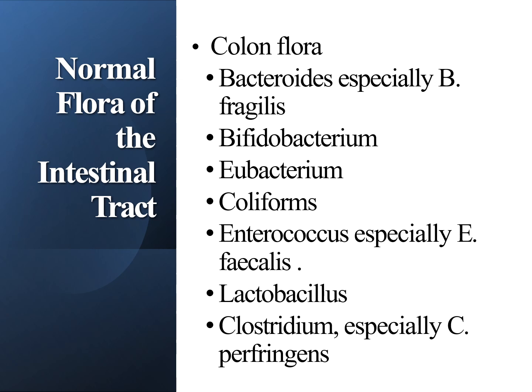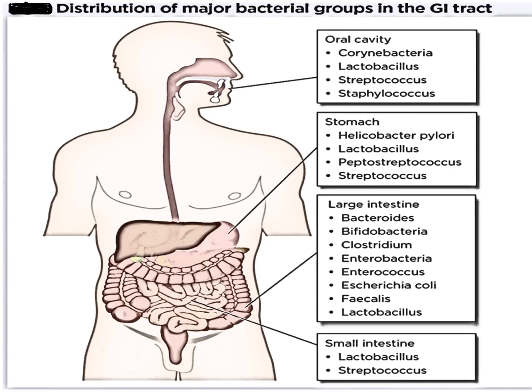The normal flora of the colon or large intestine includes Bacteroides — especially Bacteroides fragilis — Bifidobacterium, coliforms, Enterococcus — especially Enterococcus faecalis — Lactobacillus, and Clostridium — especially Clostridium perfringens. The distribution of major bacterial groups in the intestinal tract is as follows: in the oral cavity, the most common bacteria include Corynebacteria, Lactobacillus, Streptococcus, and Staphylococcus. In the stomach, we have Helicobacter pylori, Lactobacillus, Peptostreptococcus, and Streptococcus species. In the small intestine, similarly Lactobacillus and Streptococcus, while in the large intestine the most common are Bacteroides and others as described.